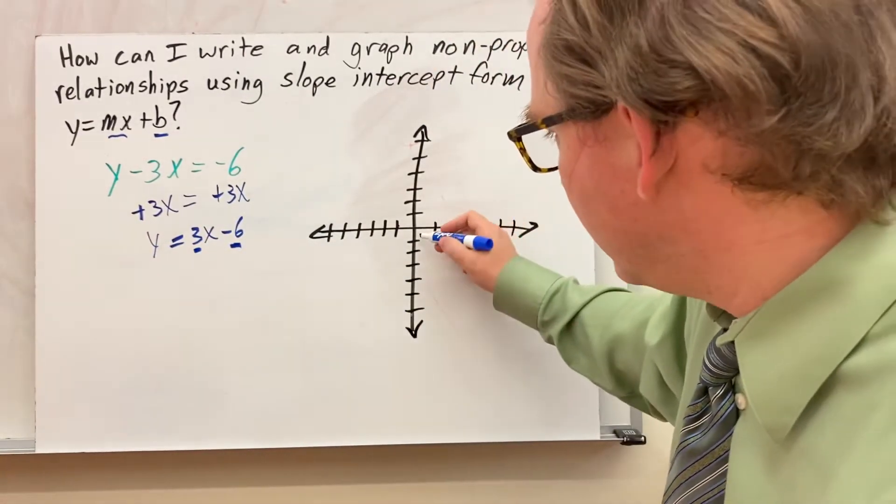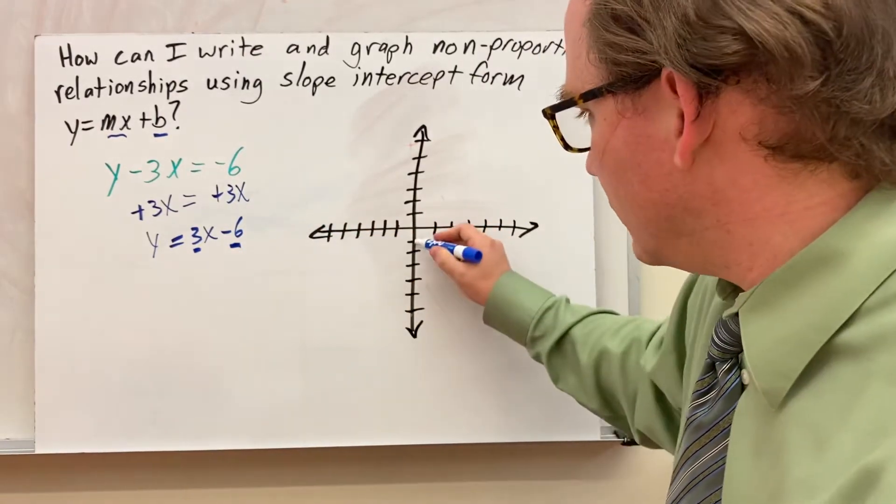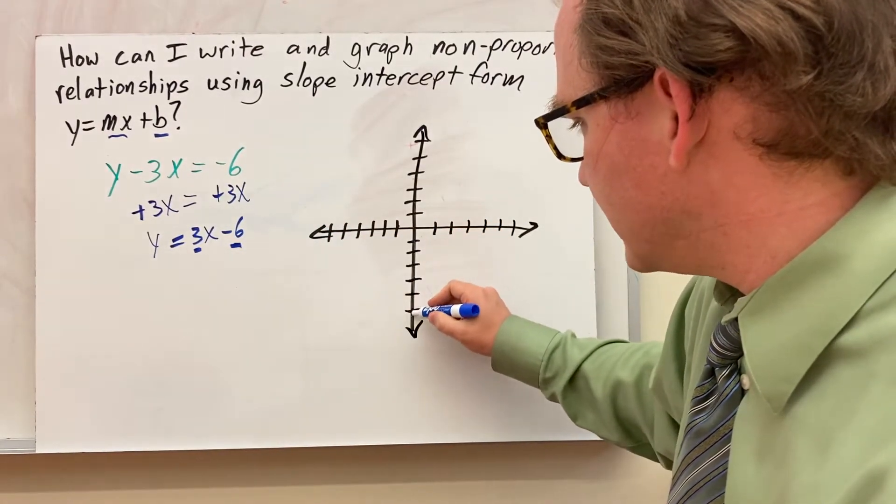So I come to my graph. I start at the origin and I go down 6: 1, 2, 3, 4, 5, 6. And I plot the y-intercept.